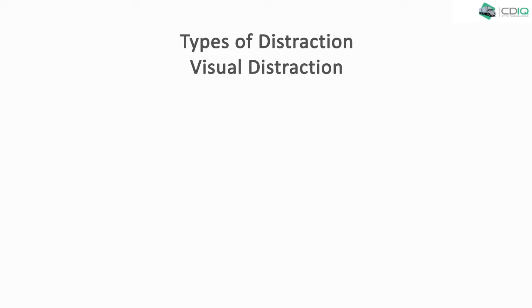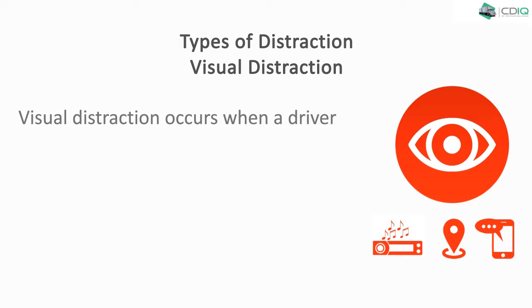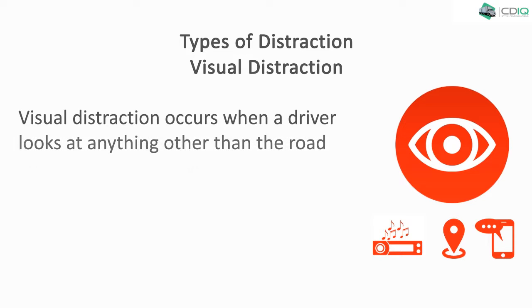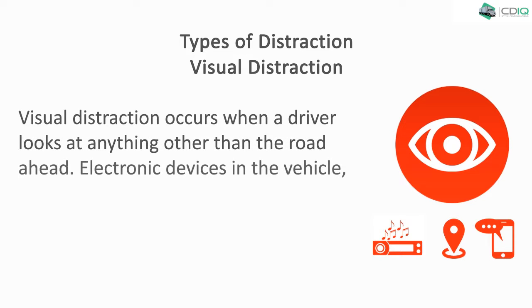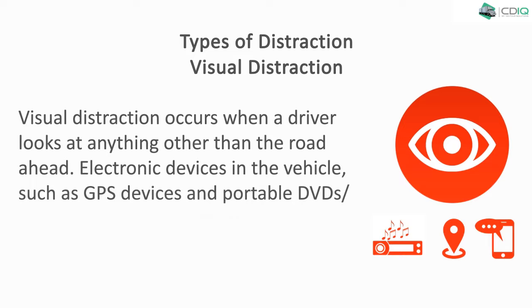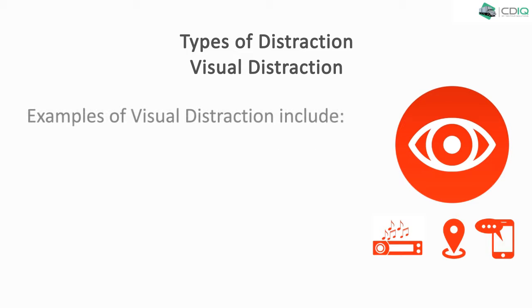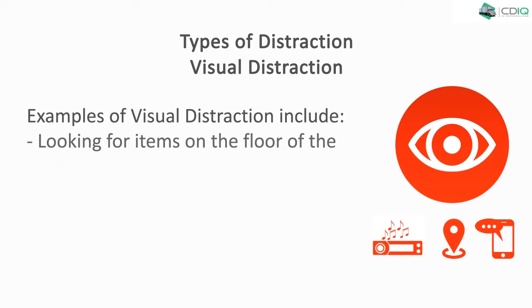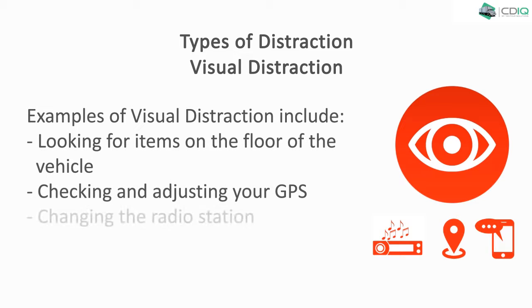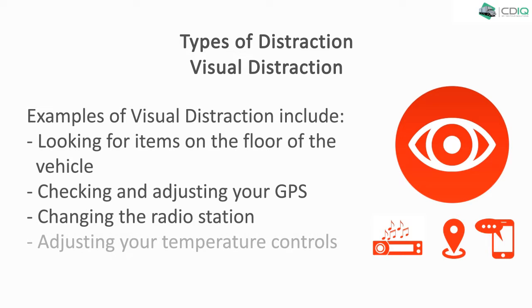Visual distraction occurs when a driver looks at anything other than the road ahead. Electronic devices in the vehicle, such as GPS devices and portable DVDs or digital entertainment systems, also distract drivers. Examples of visual distraction include looking for items on the floor of the vehicle, checking and adjusting your GPS, changing the radio station, adjusting your temperature controls, or taking in the view.